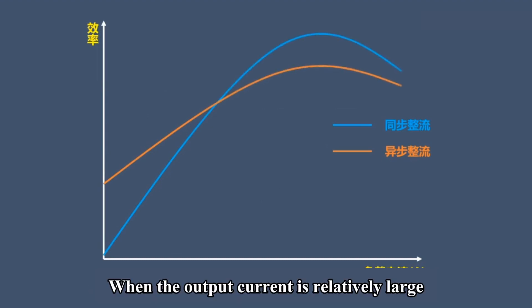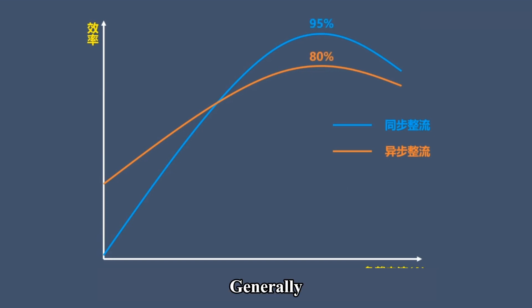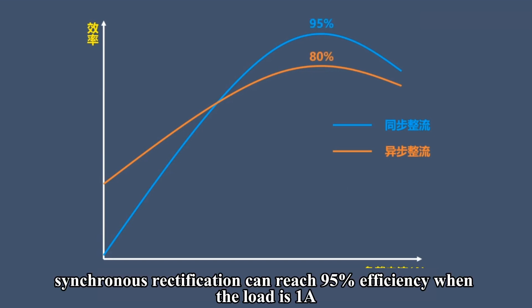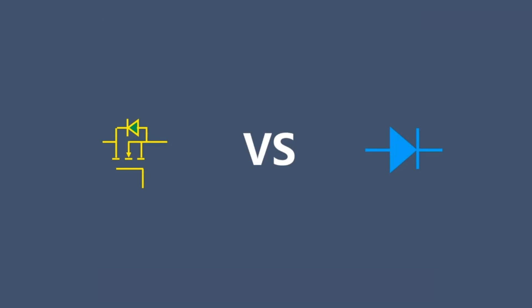When the output current is relatively large, the efficiency of synchronous rectification is higher than that of asynchronous rectification. Generally, synchronous rectification can reach 95% efficiency when the load is 1A, while asynchronous rectification can only reach about 80%.